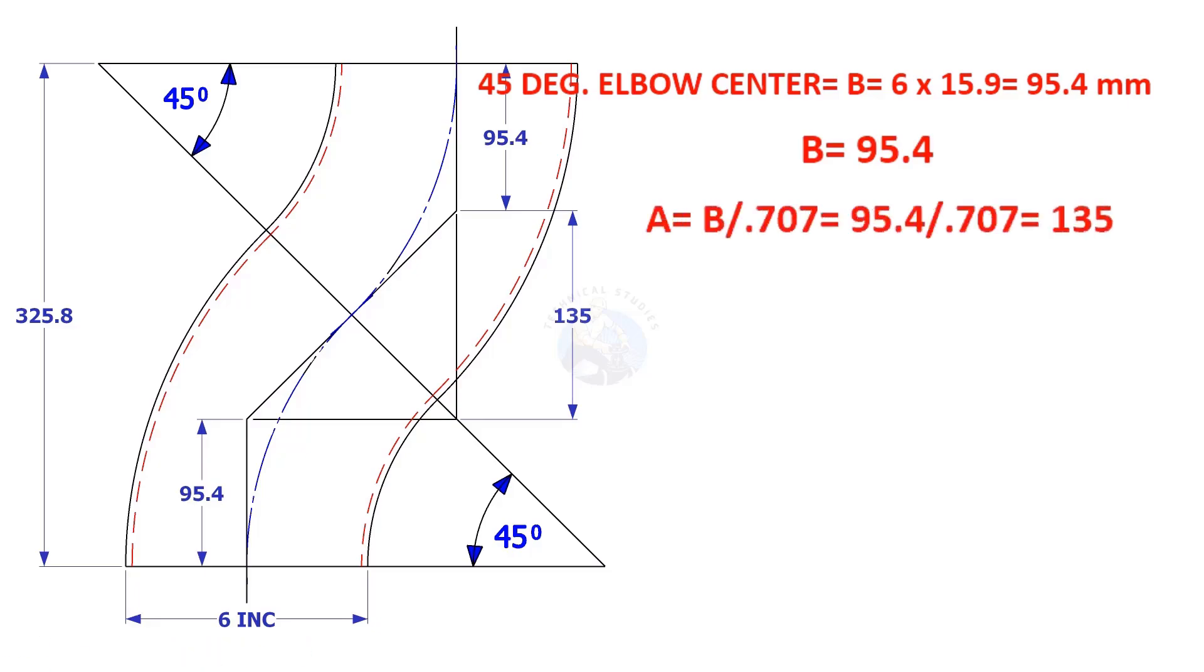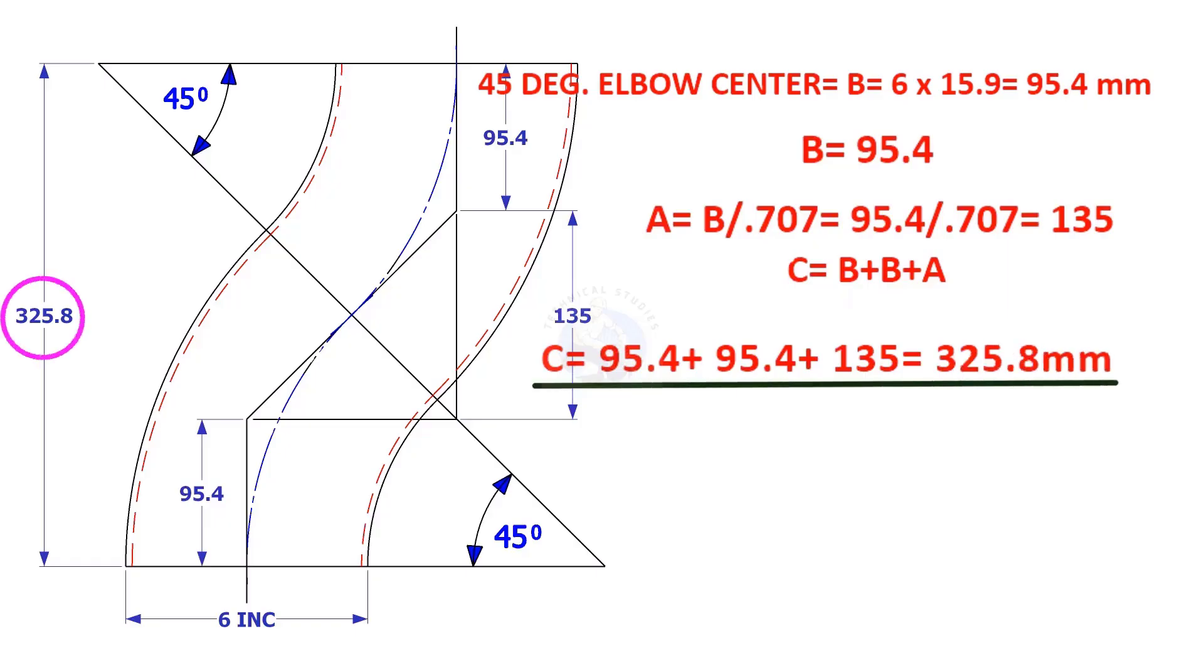A is B divided by 0.707, which is 135 millimeters. C is equal to 2B plus A, which equals 325.8 millimeters.